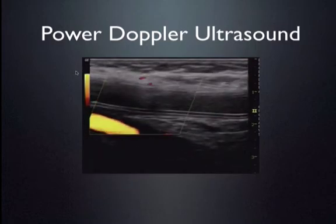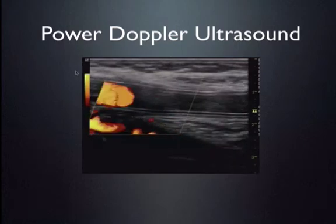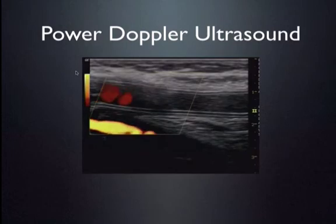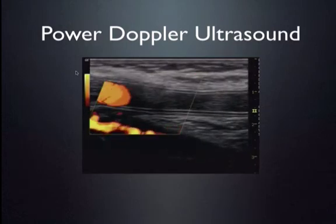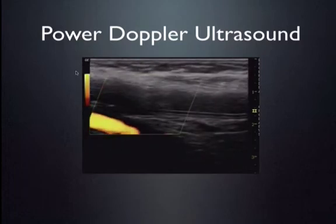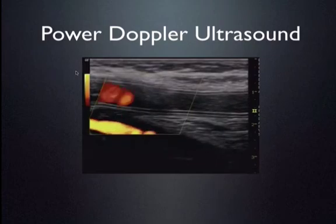Power Doppler is most useful in studying blood flow in organs where there is a very slow and low blood flow. So examples of that would be in the testicle, in the thyroid, the lymph node, and then again, that's in normal organs.